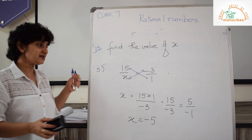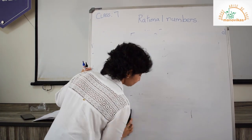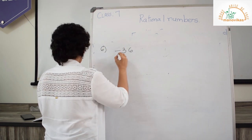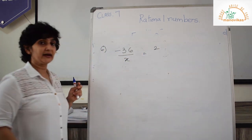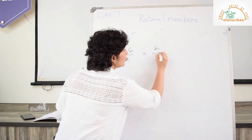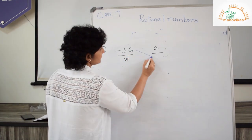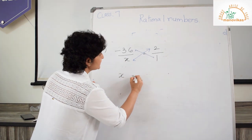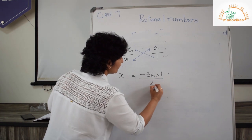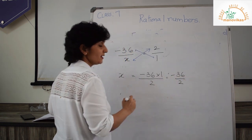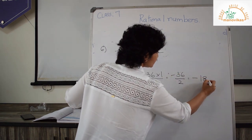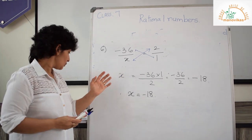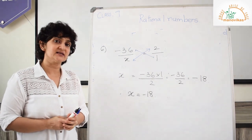I will do one more sum — the 6th: minus 36 upon x equals 2. Writing 2 as 2 upon 1 and cross multiplying: wherever there is x, it becomes upon 2. So x equals minus 36 multiplied by 1 upon 2, which gives minus 36 upon 2. Simplifying: 2 goes into 36 eighteen times, so x equals minus 18. With this, I wind up the first exercise of rational numbers. I hope you complete this and show it to me. Bye.